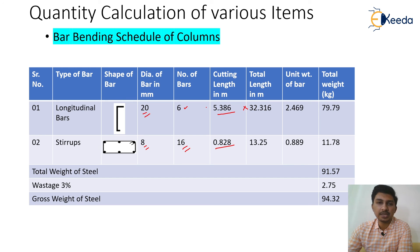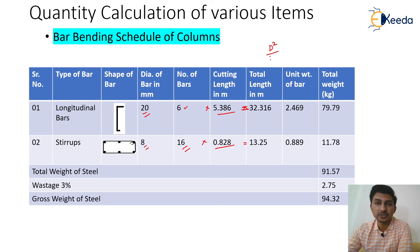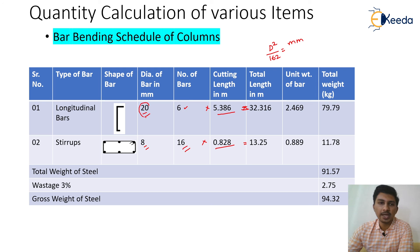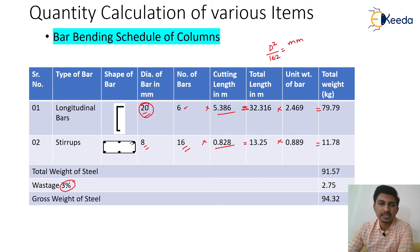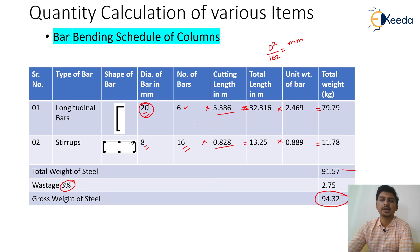Total length = number of bars × cutting length for each type. Unit weight is calculated as d²/162 (where d is in mm). Multiplying total length by unit weight gives total weight per bar type. Adding both and including 3% wastage, the total quantity of reinforcement for the column comes to 94.32 kg. Thank you so much.